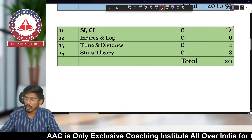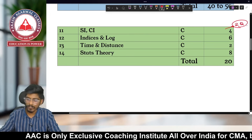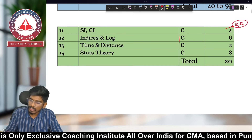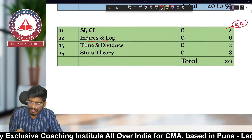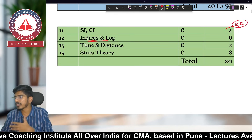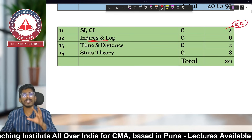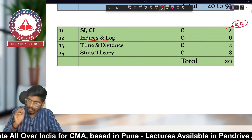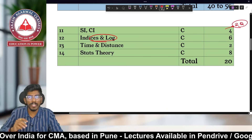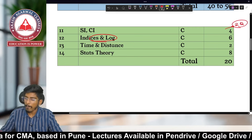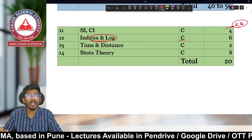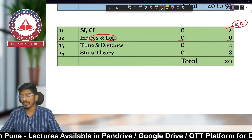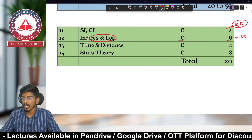Next in Category C is Log and Indices — a chapter that creates a lot of confusion. It is totally property-based and comes for six marks, meaning three questions at two marks each. Despite being a complicated chapter, it is kept in Category C due to its limited weightage.